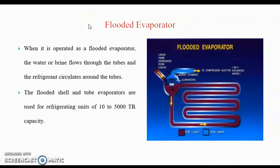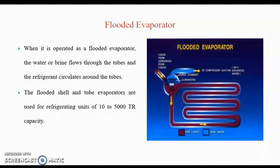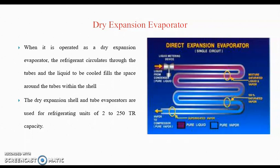The last type is the flooded type shell and tube evaporator. In the flooded type evaporator, the water or brine flows through the tubes and the refrigerant circulates around the tubes inside the shell. The flooded shell and tube type evaporator is used for refrigerant units from 10 to 5,000 tons of capacity, whereas the dry expansion type handles only 2 to 250 tons capacity.